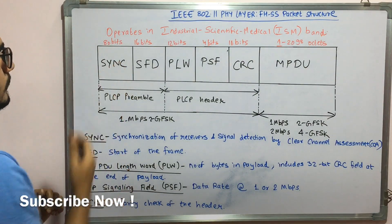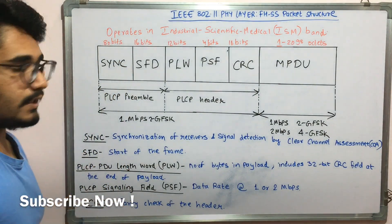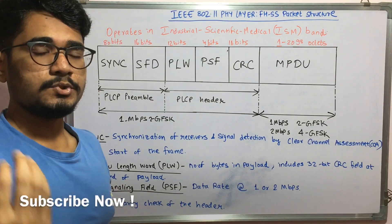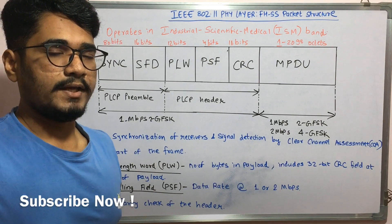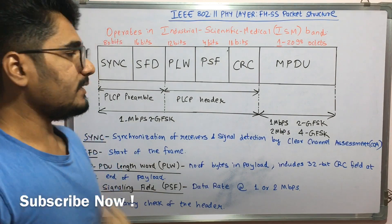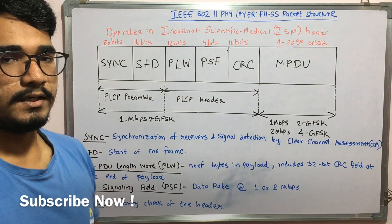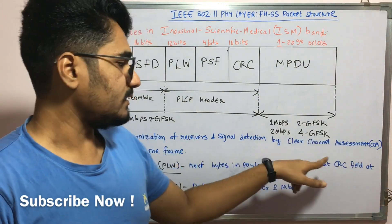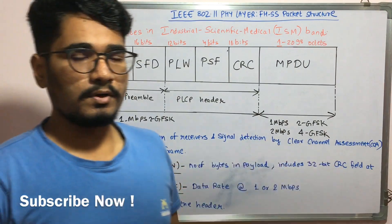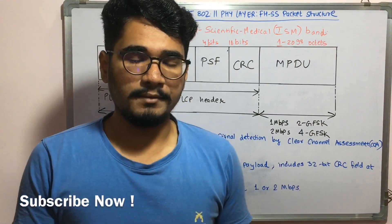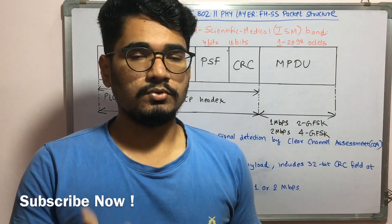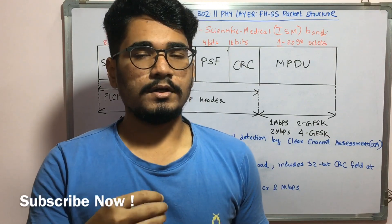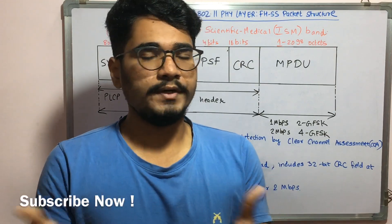We start with the very first field, that is SYNC, which stands for synchronization. It mainly deals with the synchronization of the receivers and is used for signal detection — whether any incoming or outgoing signal is present. It detects or senses by means of clear channel assessment, CCA. This CCA process is basically used to identify or sense whether the medium is idle or not. If the medium is idle then data transfer can occur; if not, you need to wait for some time.